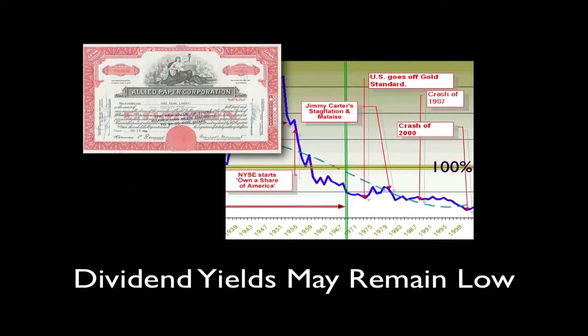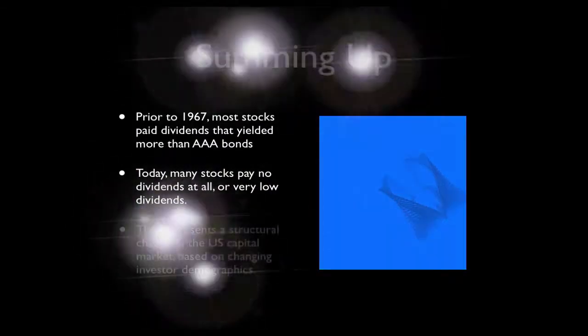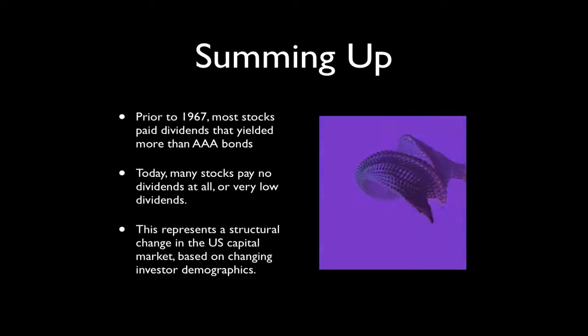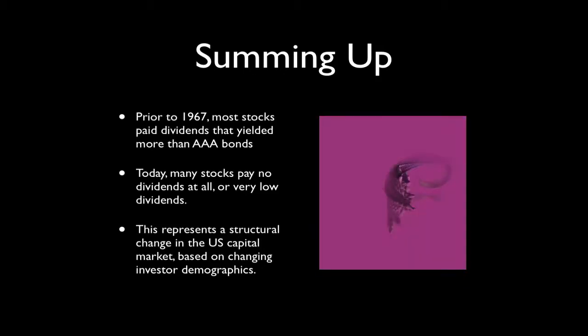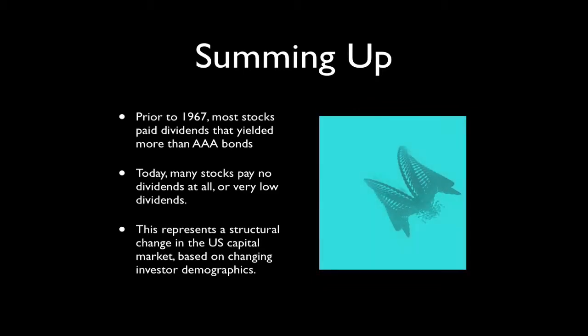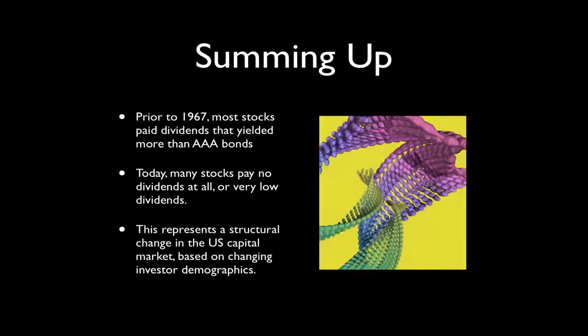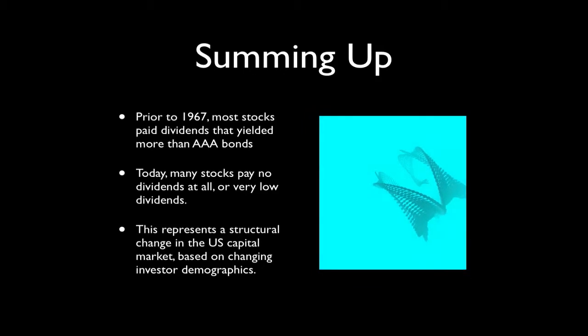Because of these fundamental, long-term structural changes in the United States capital market, it is possible that dividend yields on common stock may remain low for many years to come. Let's summarize what we have covered here. Prior to 1967, most stocks paid dividends that yielded more than triple-A bonds. Today, many stocks pay no dividends at all, or very low dividends. This represents a structural change in the United States capital market, based on changing investor demographics. The next video in this series explains in greater detail, based on information from the Google Stock Screener, how stock dividend yields are broken down.